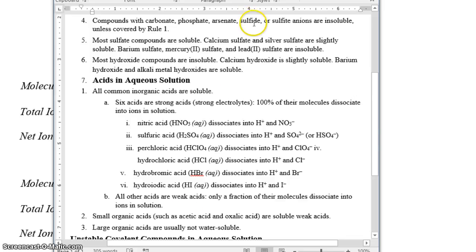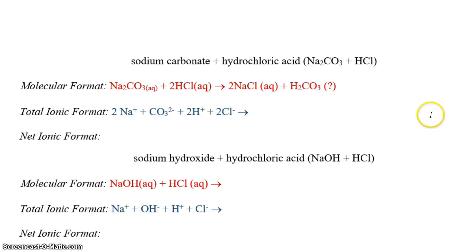So how do we write that? Let's go back to our other window and take a look. So we're going to write this as aqueous, and then we're going to also write this as aqueous because it's still dissolved in water. But when we go to write the total ionic format, and I'm pointing at the screen here.